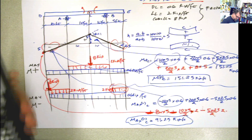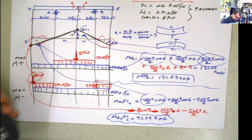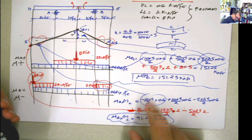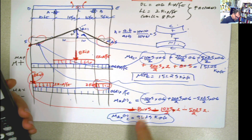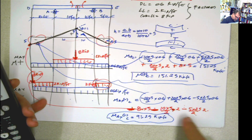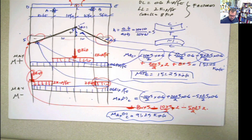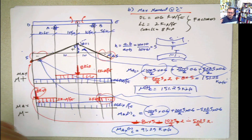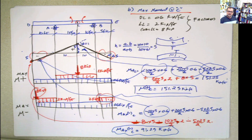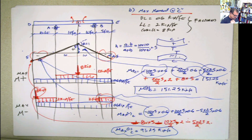Let me verify: the dead load part was 11.25. The negative live load part is 40 plus 50 equals 90, negative 90. And 12.5 negative, plus 11.25 gives 91.25 — correct. So maximum negative moment at C is 91.25 kip-feet. This is the moment. Remember, when someone asks for the maximum moment at a point like this, you must give both maximum positive and maximum negative, because the compression-tension behavior of the elements changes — and this is really important to keep in mind.